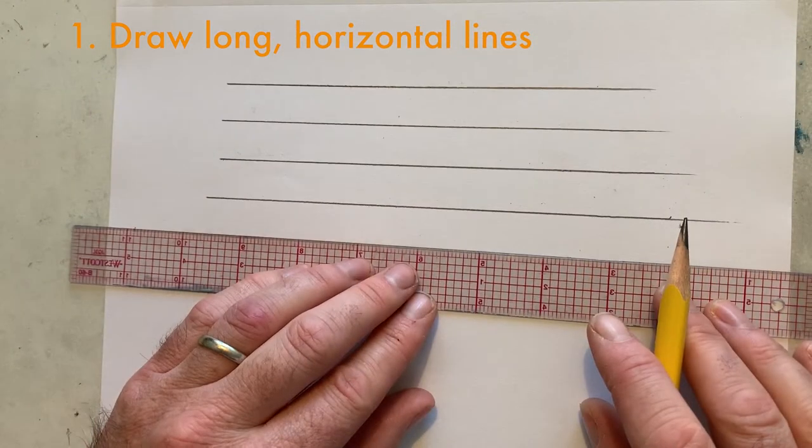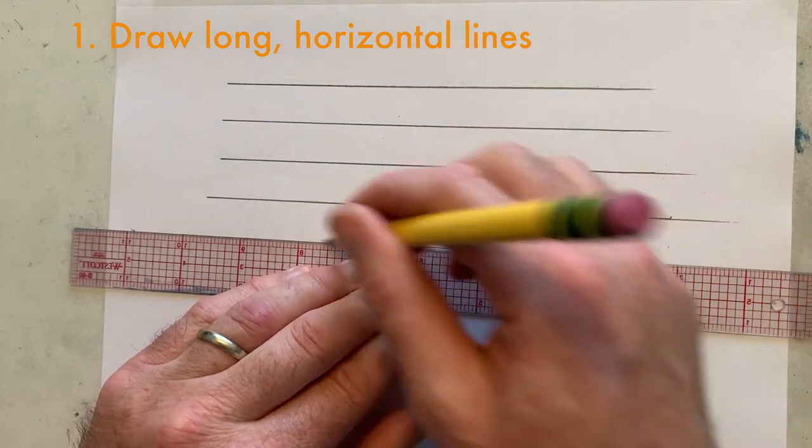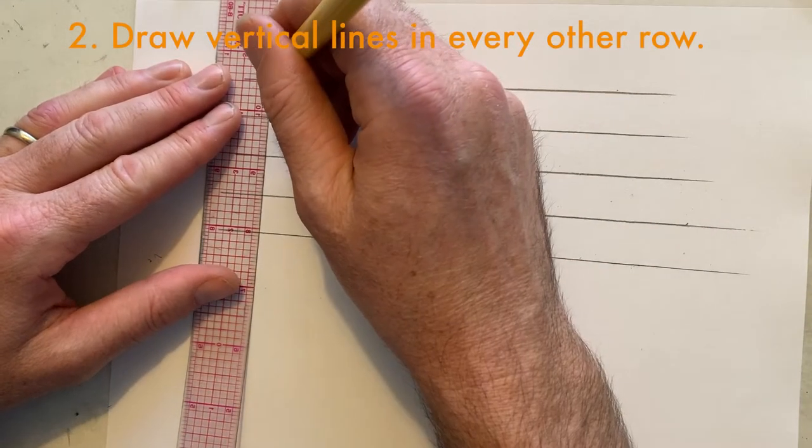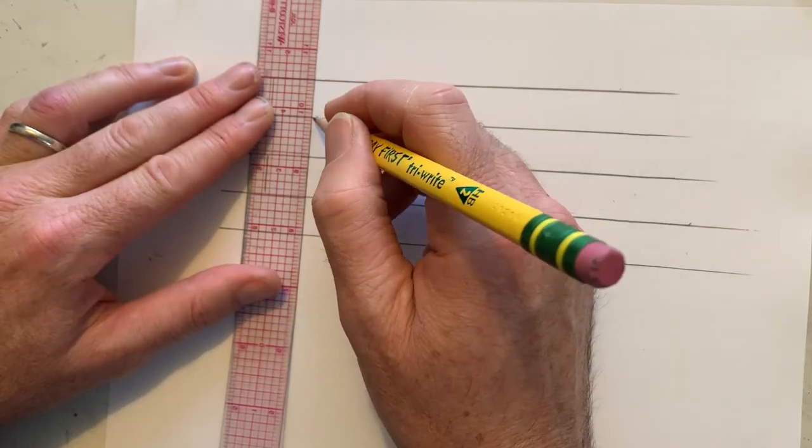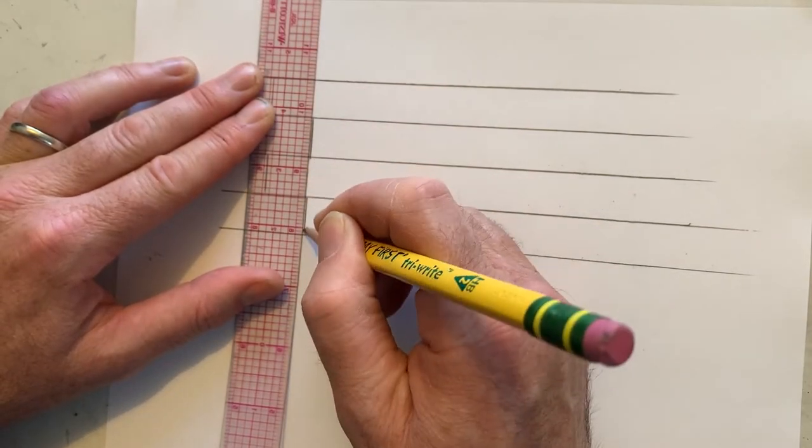The fastest way I've found is to lay in some long horizontal lines, then go back in and draw a bunch of vertical lines one above the other, skipping every other row. Draw a line, skip a space, draw a line, skip a space, and so forth.